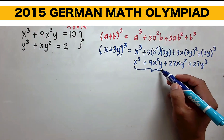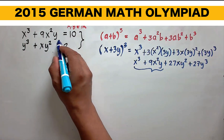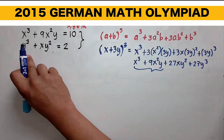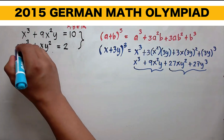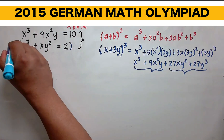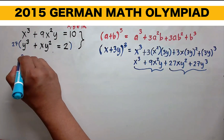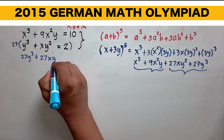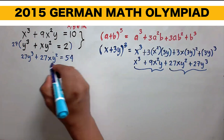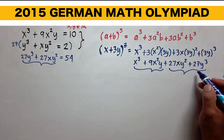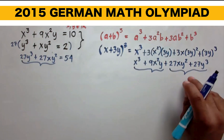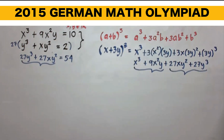Notice that x cubed plus 9x squared y is exactly the left side of the first equation. But the problem is the second equation — how can we transform it? If we multiply the second equation by 27, the left side becomes 27y cubed plus 27xy squared, and the right side becomes 54. This part is exactly the last two terms of the expansion of (x + 3y) cubed. That's the beauty of this math Olympiad problem.